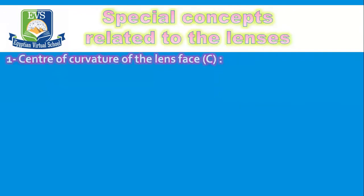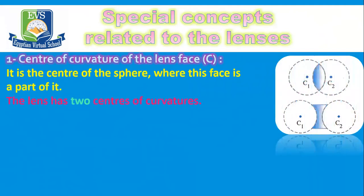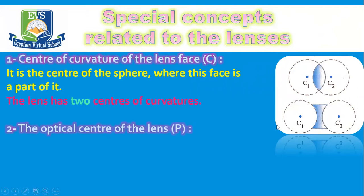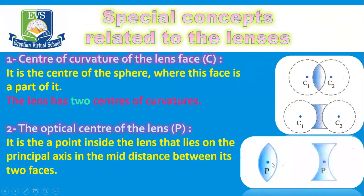Special concepts related to lenses. Number one, center of curvature of the lens face, C: the center of curvature is the center of the sphere of which this face is a part. Each lens has two centers of curvature. The optical center of the lens, P, is the point inside the lens on the principal axis at the mid-distance between its two faces.